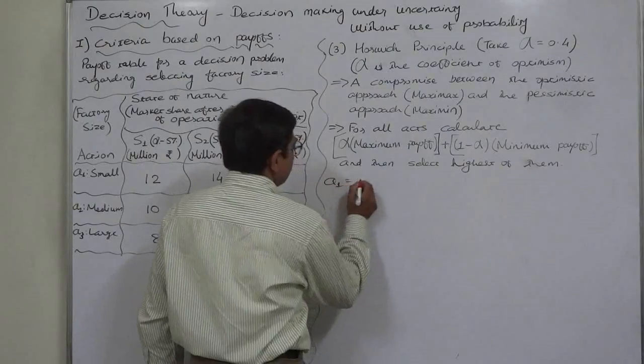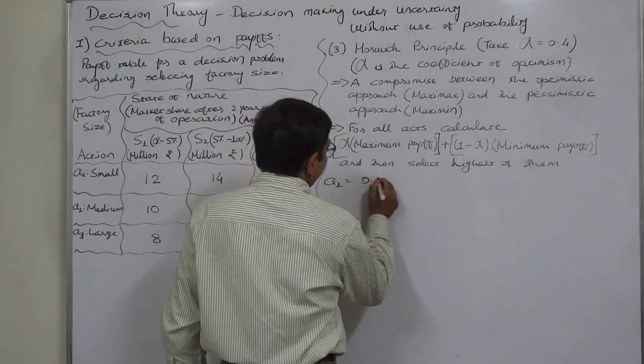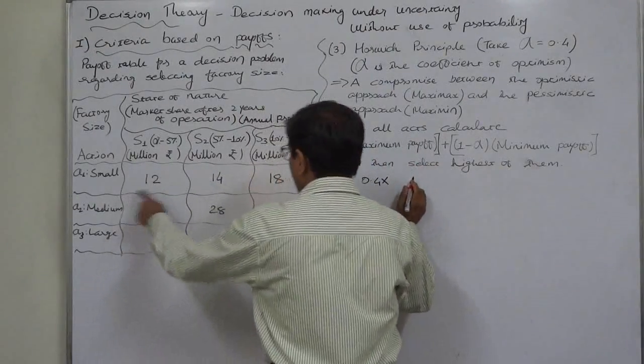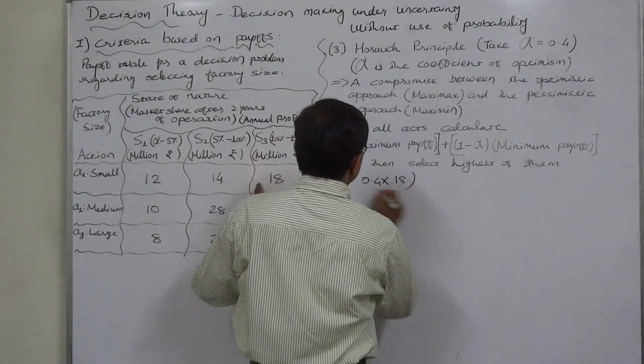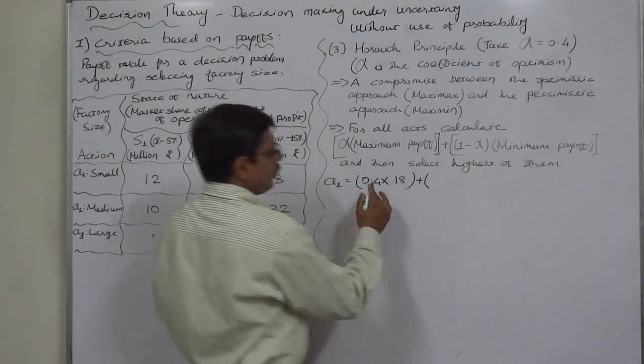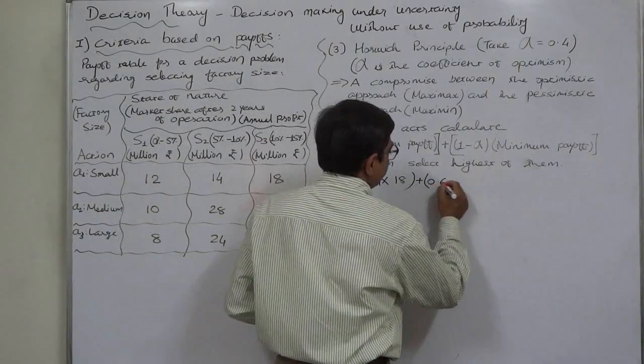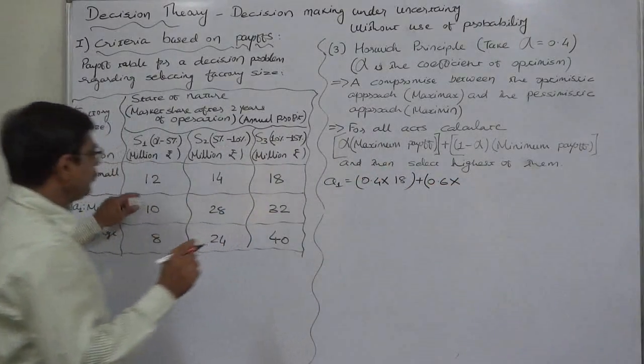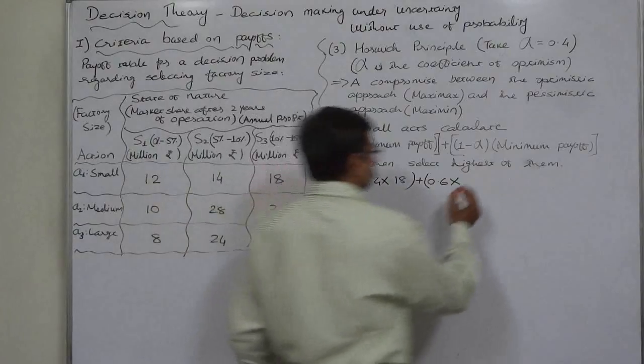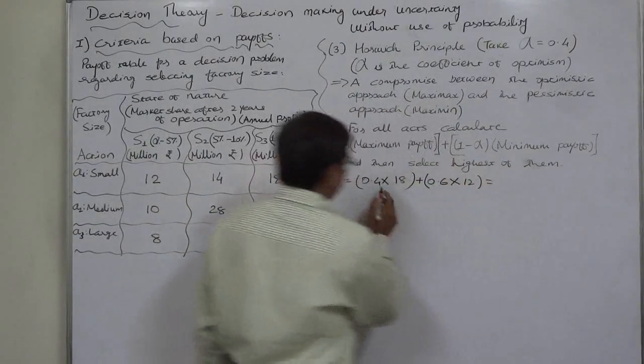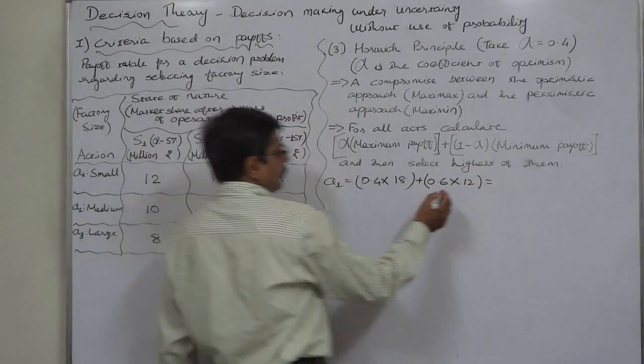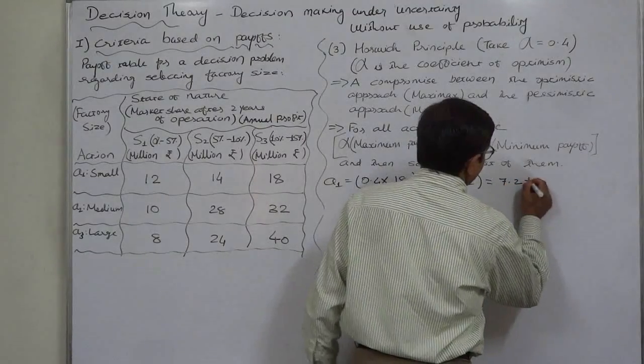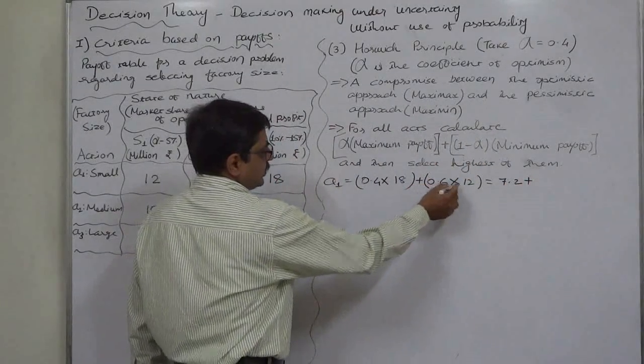Let's do it for this case. There are three actions: a1, a2, a3. First, for a1, it will be alpha 0.4 into maximum payoff of 18, plus 1 minus alpha, 0.6, into the minimum payoff of 12.